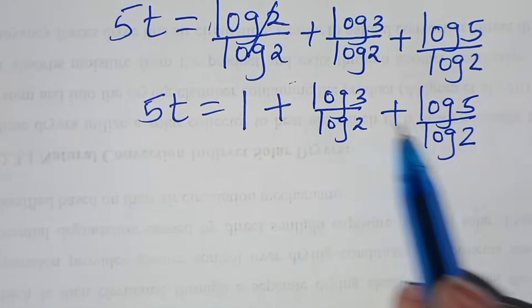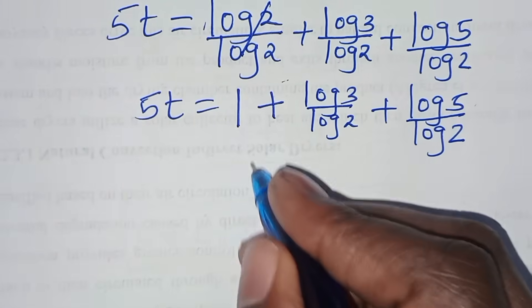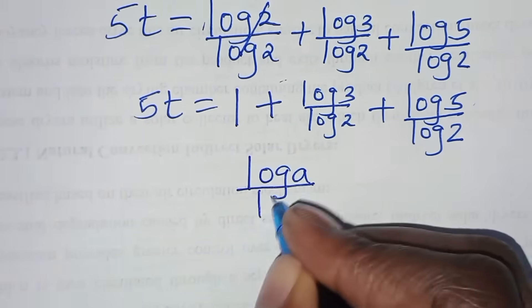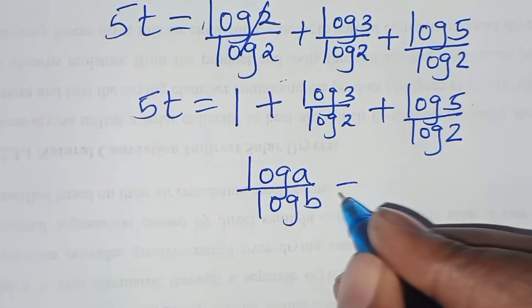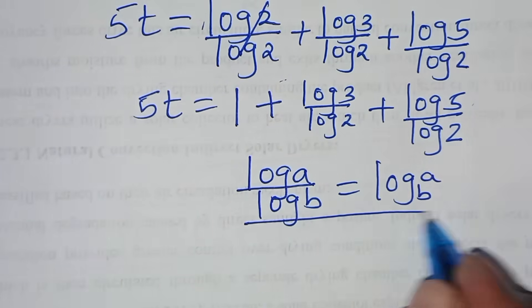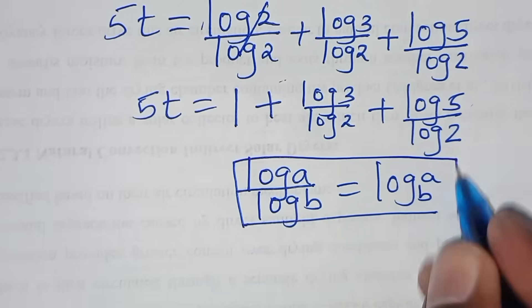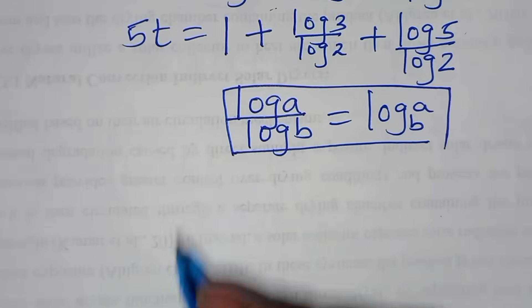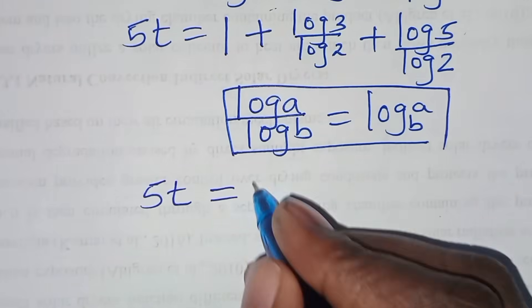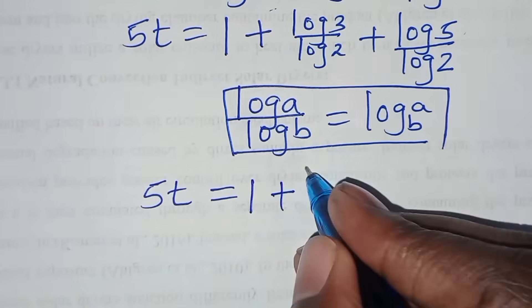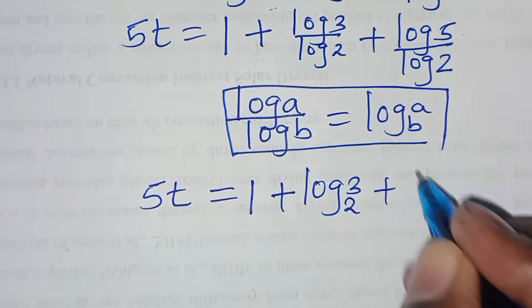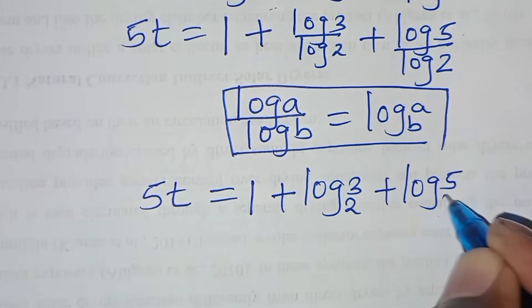Now log 3 divided by log 2, and log 5 divided by log 2, are in the form of log a divided by log b, which can be expressed as log a to base b. Applying this change-of-base property, we have 5t equal to 1 plus log 3 to base 2, plus log 5 to base 2.